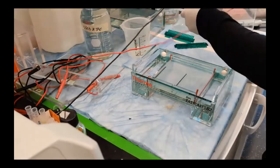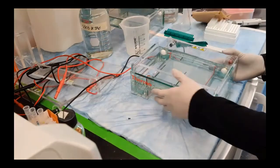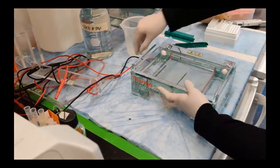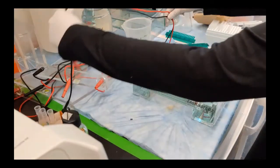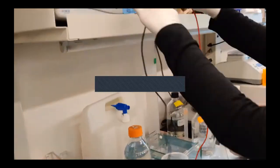And all we have to do now is connect the tank to the machine and you can see here there are the negative and the positive electrodes. And off we go!